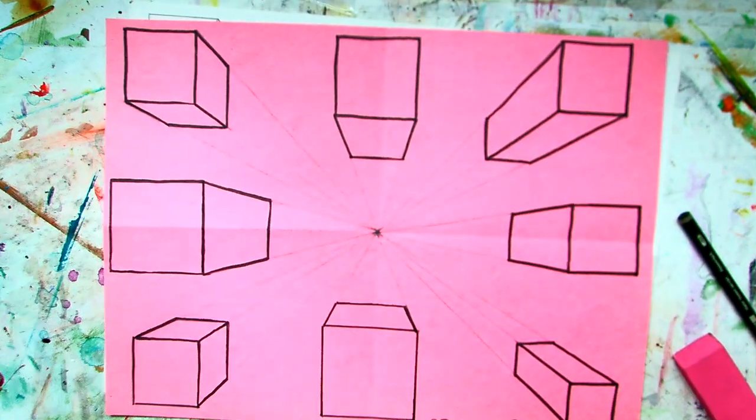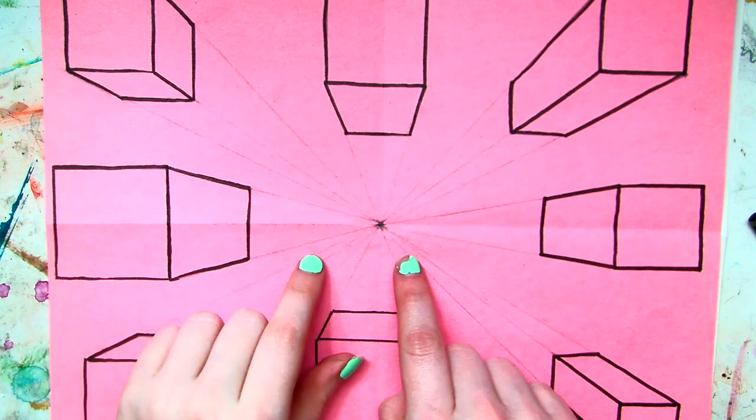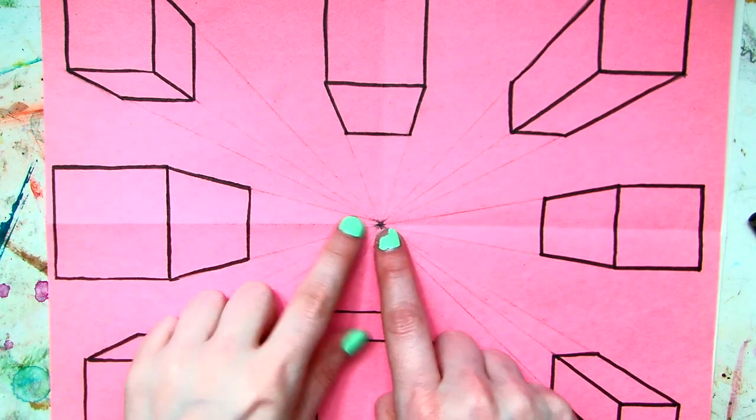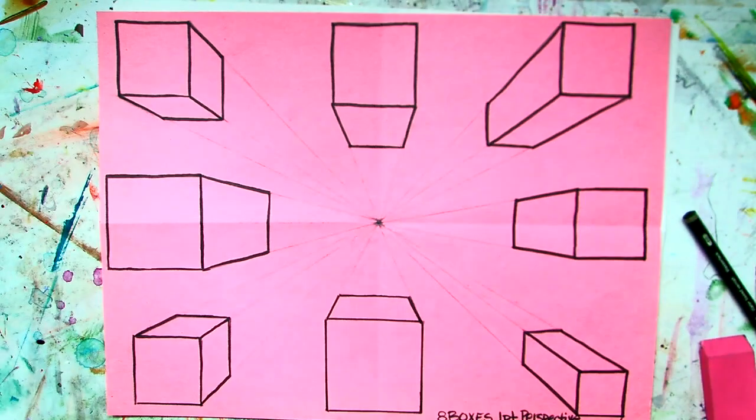Now, granted, I was using a darker pencil. So, you can see my lines. But, I don't want to see your lines. You can leave the vanishing point there. That's fine. I don't want to see your converging lines once you erase them. And that is it.